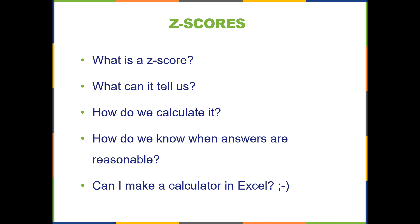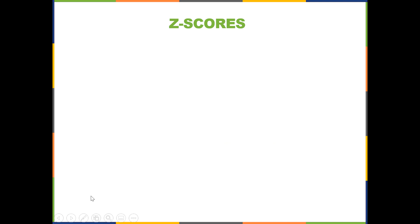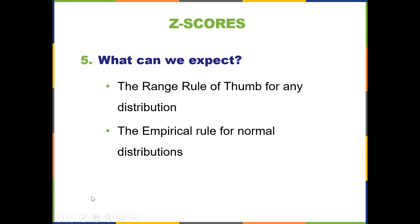Now I'm going to talk to you about what we can expect based on a couple of rules that help us to know how things are going to be spread out. The range rule of thumb works for any distribution, so this doesn't have to be normal or bell-shaped. It can be uniform, it can be exponential, it can be any number of different distribution shapes. The empirical rule will work only for normal bell-shaped distributions.